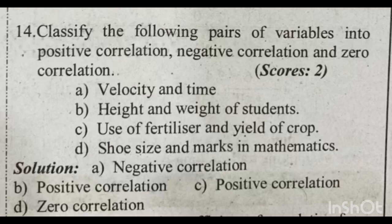In this case, you should classify the pairs. If you say positive correlation or negative correlation, you should give the example of the pairs. Income and expenditure is positive correlation, and price and demand is negative correlation.